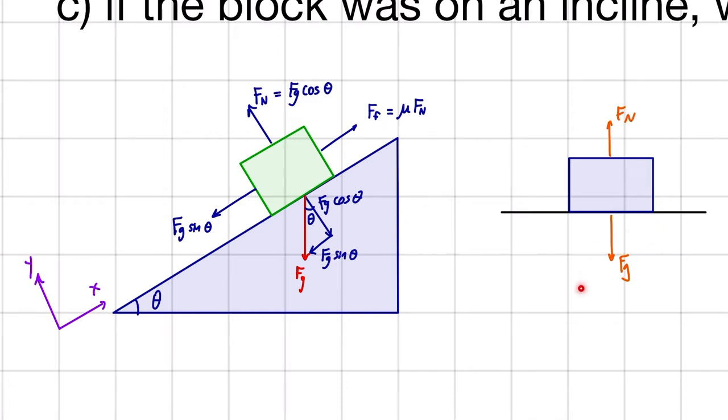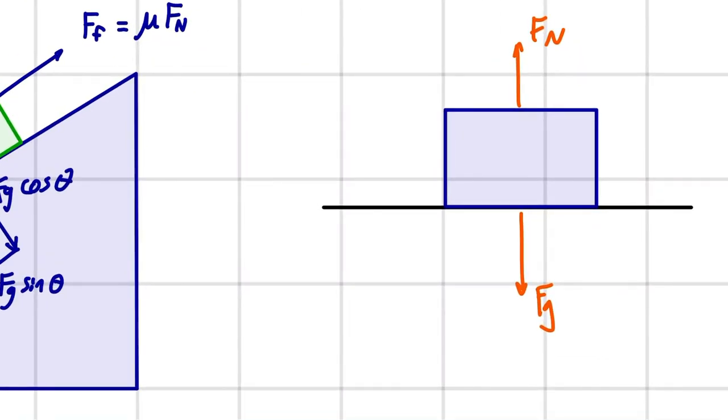What's true here, gravity is always going to be straight down, but the normal force is not necessarily always straight up. The normal force is actually - what's important about the normal force is that it's perpendicular to the ground. That's what's important about the normal force.